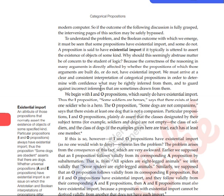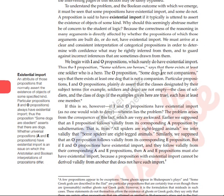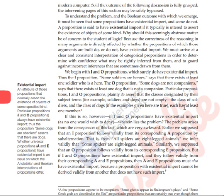We begin with I and O propositions which surely do have Existential Import. Does the I proposition 'Some soldiers are heroes' say there exists at least one soldier who is a hero? Yes — when we talk about the soldier class, there is a soldier in that class and there is a hero. The O proposition 'Some dogs are not companions' means there is a dog that is not a companion. In that class, at least one object exists — it can be more than one member, but it at least has one member.